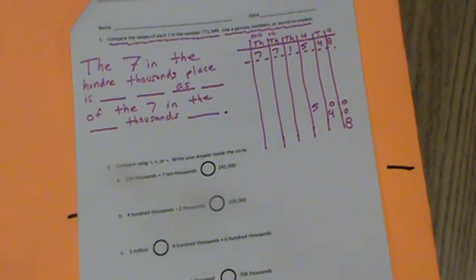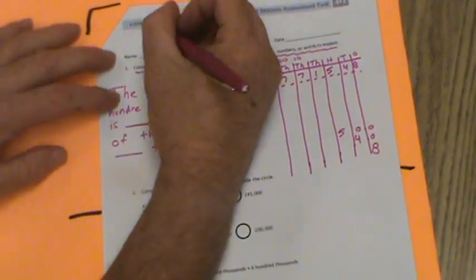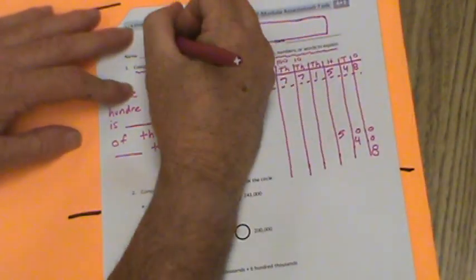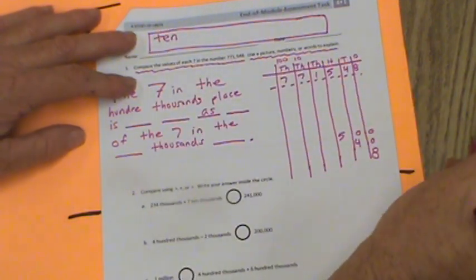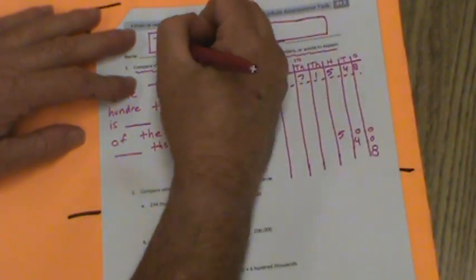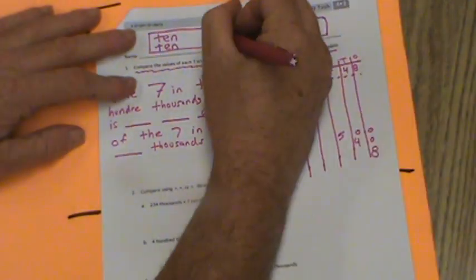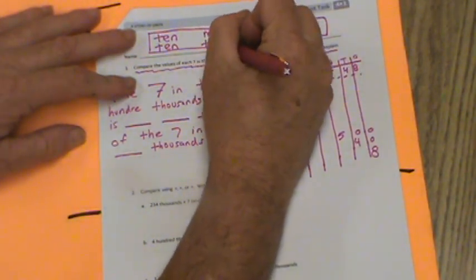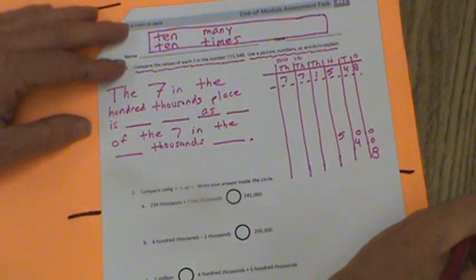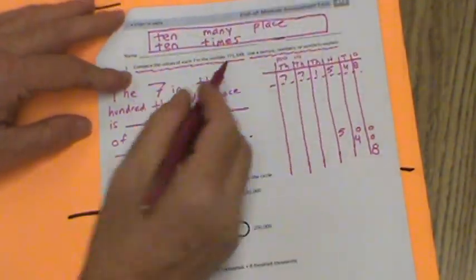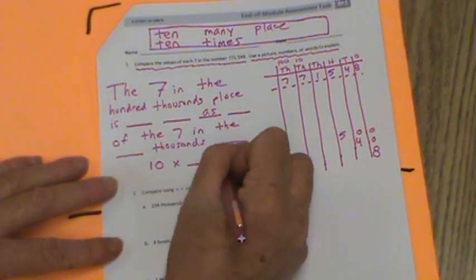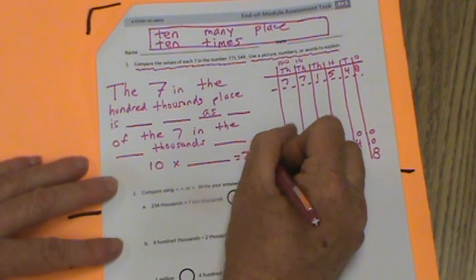Now I do a word bank for you. So we're going to make a word bank up here where your name is. You pause that if you need to copy. These are the words you're going to use to fill in the blanks. Word bank: one word is ten, another word is ten again, there's two tens in there, many, times, and place. Those are the five words you're going to use to fill in the blanks there. Then we're going to have a multiplication sentence. 10 times blank equals 700,000.